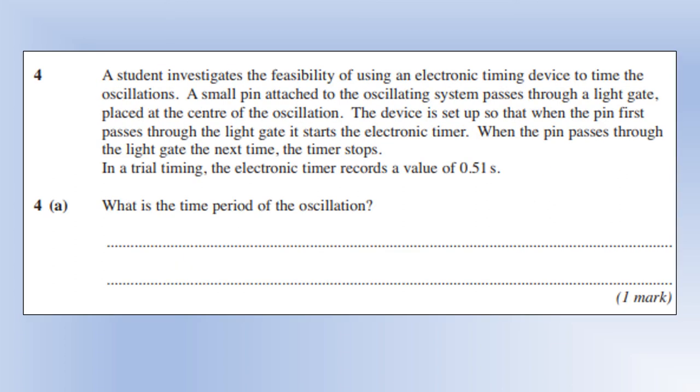And so a student investigates the feasibility of using an electronic timing device instead to time the oscillations. A small pin is attached to the oscillating system that passes through a light gate at the center of the oscillation. The device is set up so when the pin first passes through, it starts the timer, and when the pin passes through again, the timer stops. In trial timing, it records the value of 0.15 on seconds. What is the time period? Well, it's measured. If it's gone from center up and back to the center, that's half the time period. So the full time period would be 1.02.